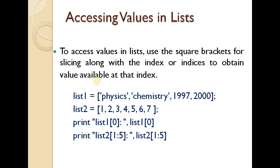Next, we are discussing accessing values in a list. We use square brackets for slicing along with the index or indices to obtain a value at that index. For example: list1 = ['physics', 'chemistry', 1997, 2000], list2 = [1, 2, 3, 4, 7]. Then print list1[0] gives the 0th value.